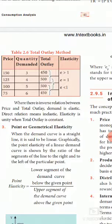In the table, the prices are 150, 125, 100, and 75. When the price decreases, the quantity demanded increases: 3, 4, 5, 6. We calculate total revenue as price multiplied by quantity: 150 into 3 equals 450; 125 into 4 equals 500; 100 into 5 equals 500; 75 into 6 equals 450.